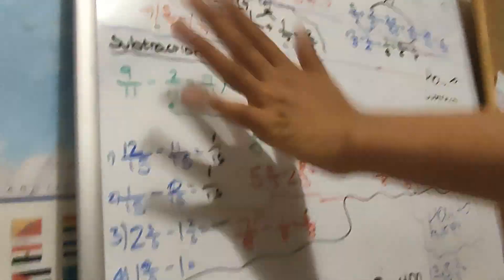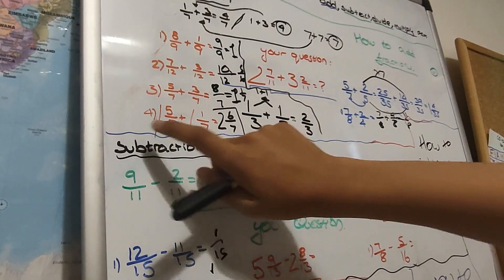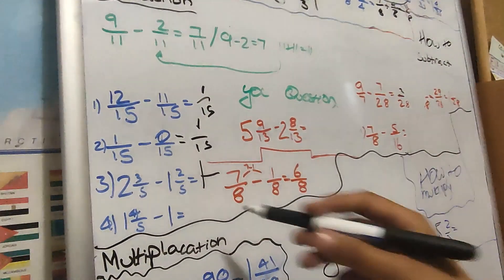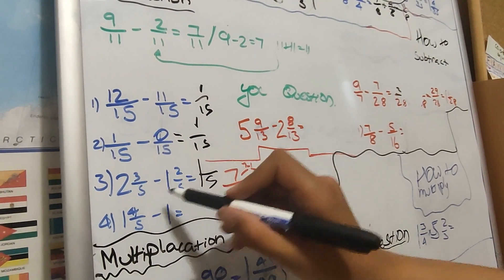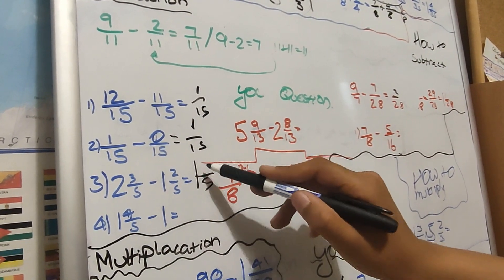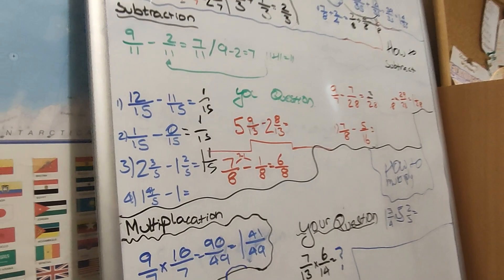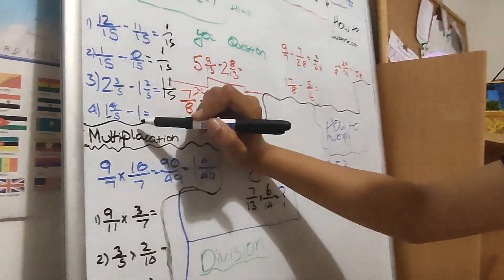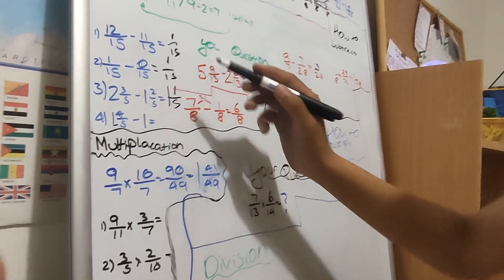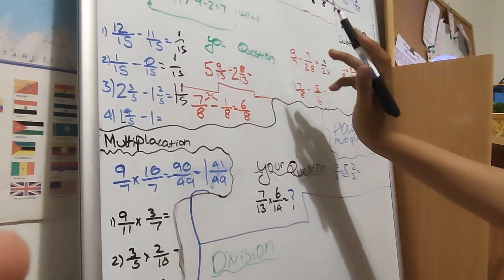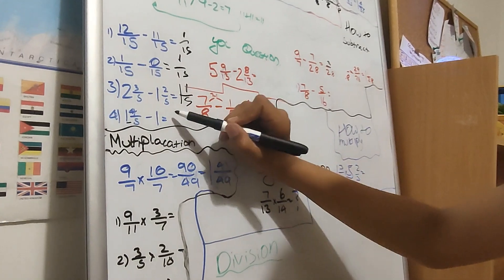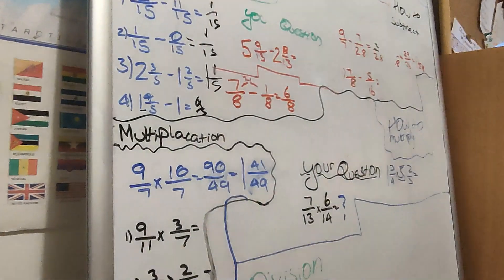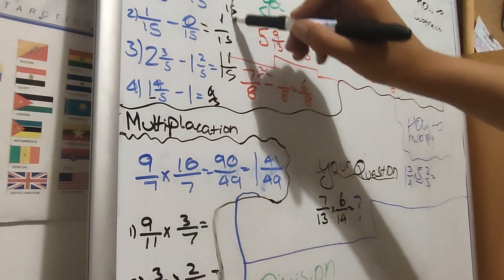Next: denominator is going to be 15 because both of them are. 1 take away 0 is 1. Then we do the next one — we divide it to get 1 whole, and then the denominator is 5. Then 3 take away 2 is 1, so 1 whole and 1/5. Now finally the last question: 1 whole and 4/5 take away 1 whole. 1 whole minus 1 whole is 0, so you don't have any whole numbers — you're just left with 4/5.